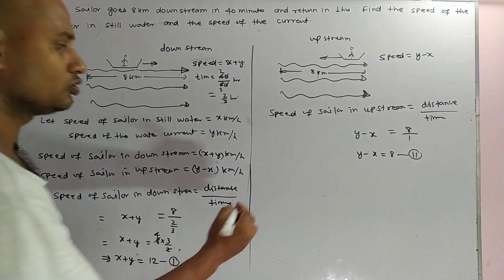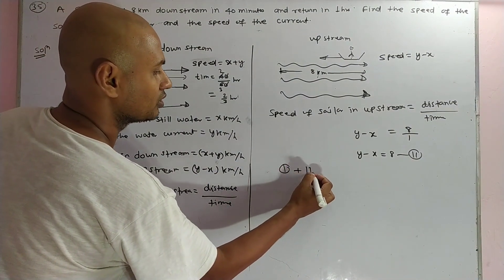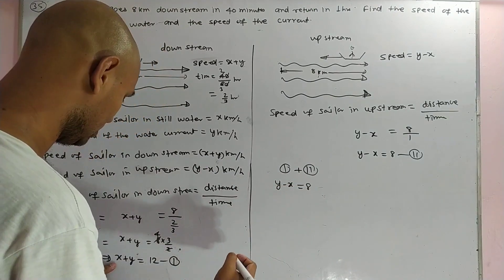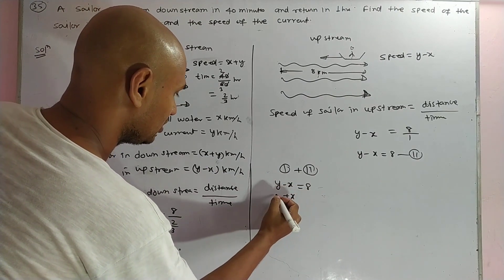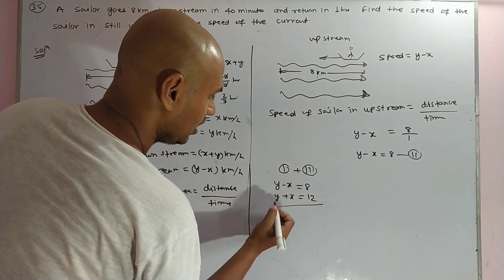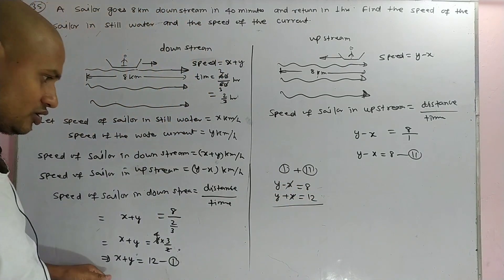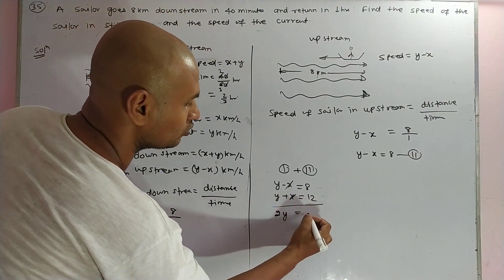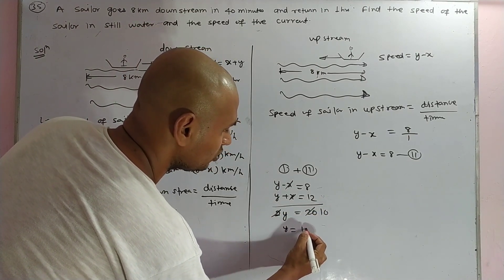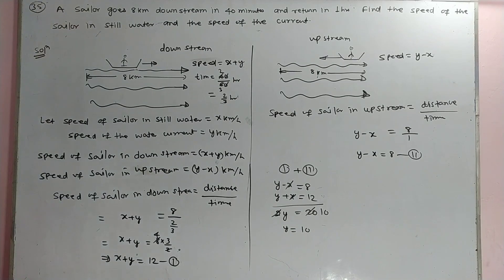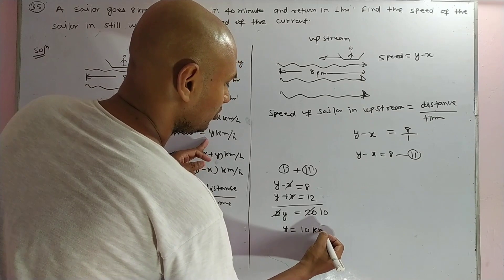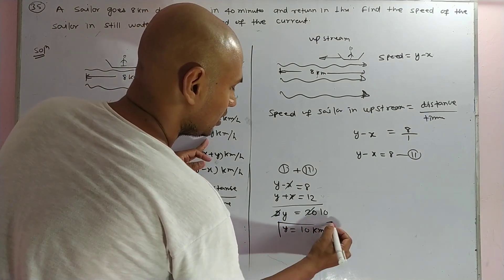As you add equation 1 and equation 2: y minus x equals 8, plus x plus y equals 12. The x terms cancel out, giving 2y equals 20, which gives y equals 10. So the speed of the water current is 10 kilometers per hour.